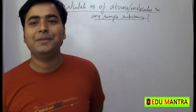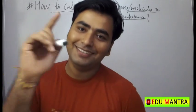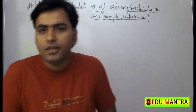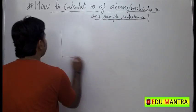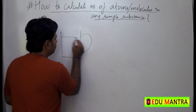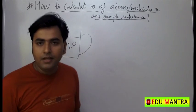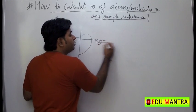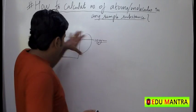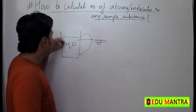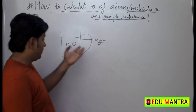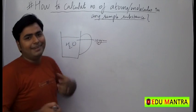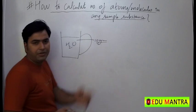Today we are going to learn how to calculate the number of atoms and molecules in any sample. Suppose I am given one cup of water — water means H₂O. One cup, suppose it is given as 10 grams. It can be any mass. We need to know the mass, and we can calculate the number of molecules of H₂O.